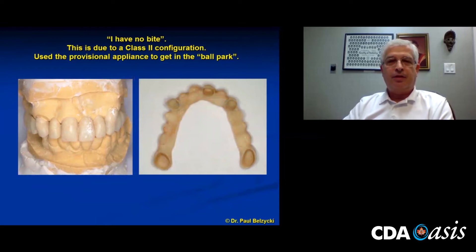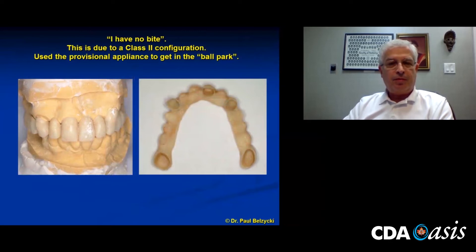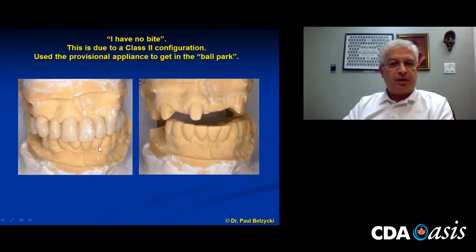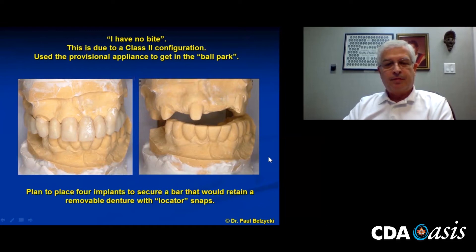I used his provisional appliance to get a ballpark mounting. I took an impression of the copings, put his appliance in place, mounted it, and had at least a starting point. The plan was to place four implants to secure a bar that would retain a removable denture with locator snaps.